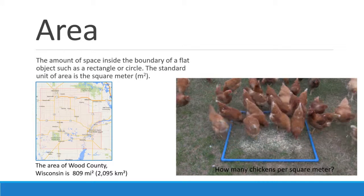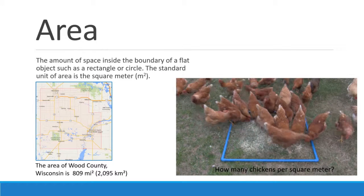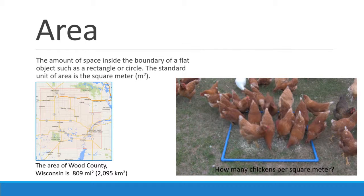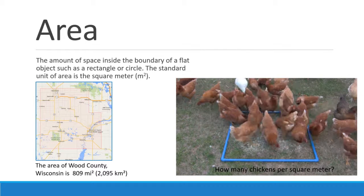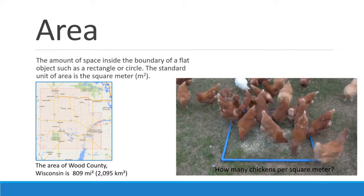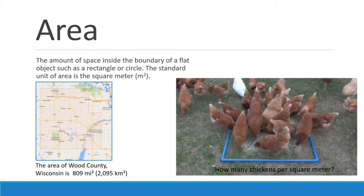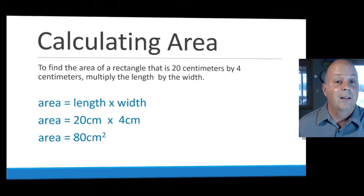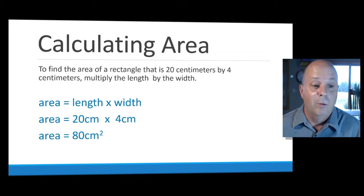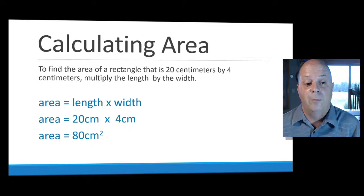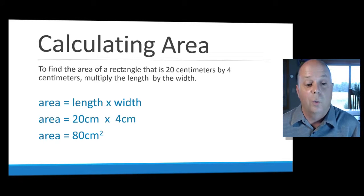Wood County has an area of 2,095 square kilometers. You want a fun math challenge? Find out how many chickens could fit into Wood County. A much simpler calculation would be to calculate area: if you multiply length times width you'll get the area. 20 centimeters times 4 centimeters is going to give us 80 centimeters squared.